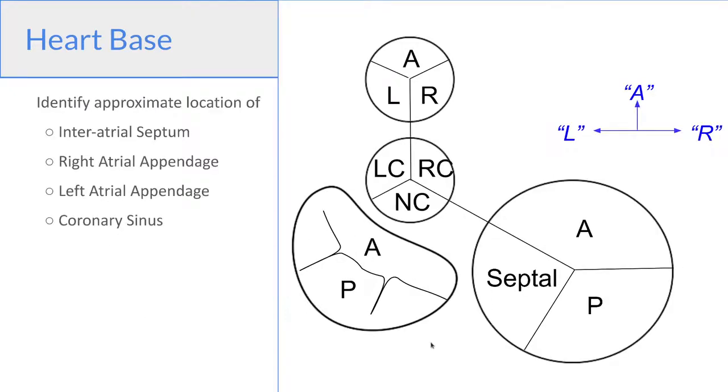And we can then quickly label all of the cusps. So the aortic valve in the middle has a right coronary cusp, a left coronary cusp, and a non-coronary cusp. The pulmonic valve in the front has an anterior right and left cusps. The tricuspid valve has an anterior, posterior, and septal leaflets. And the mitral valve has an anterior and posterior leaflet.